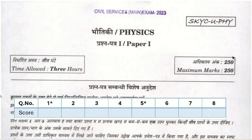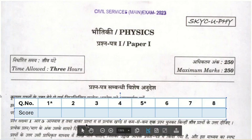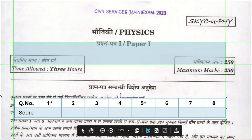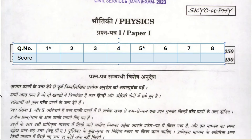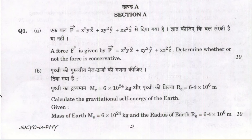On the screen you can see Paper 1 of 2023. We are given eight questions in each paper. Question numbers 1 and 5 are compulsory. Other than these, we have options to attempt three more questions. Let's move to Question 1. First part — showing whether the force is conservative or not — we allot 10 marks.